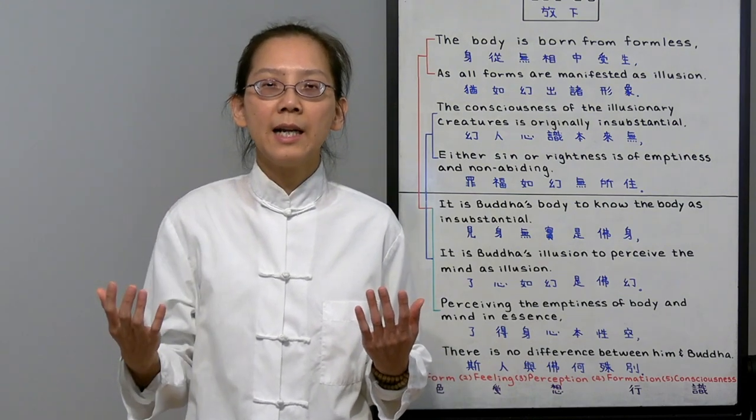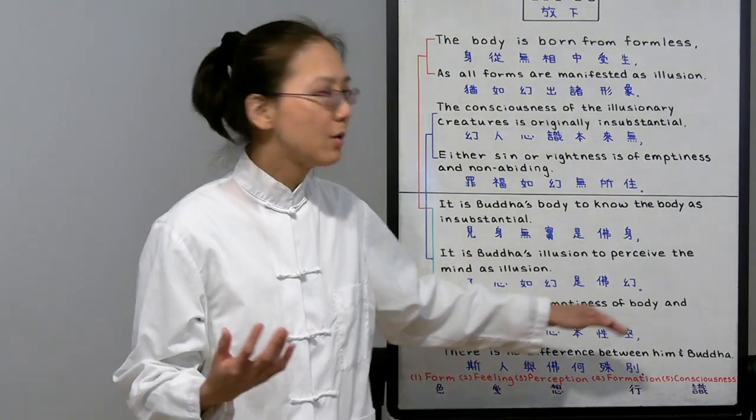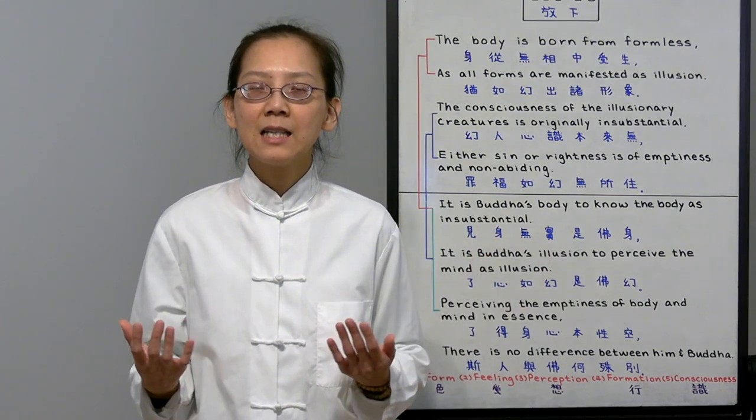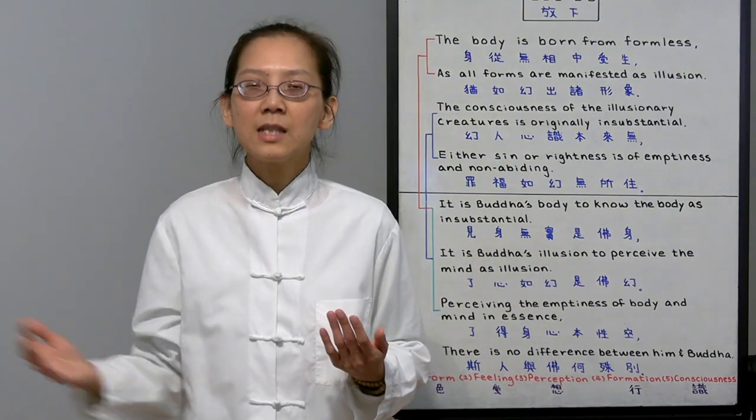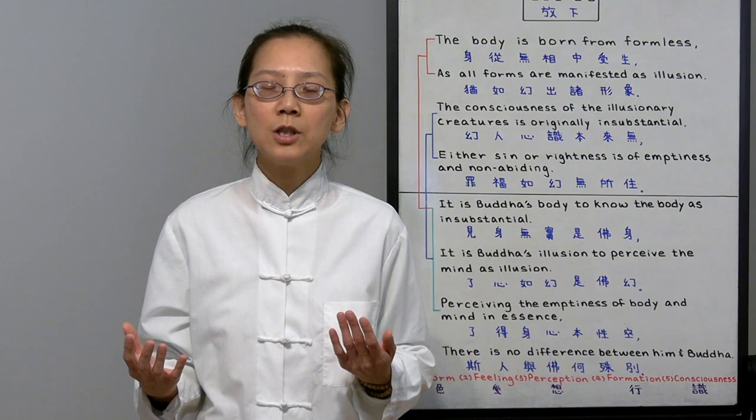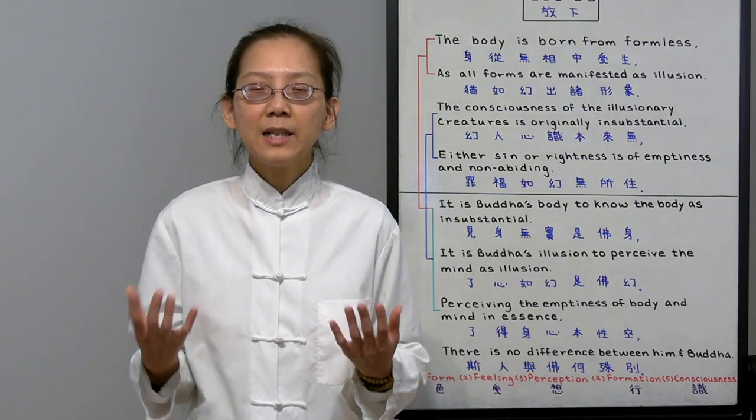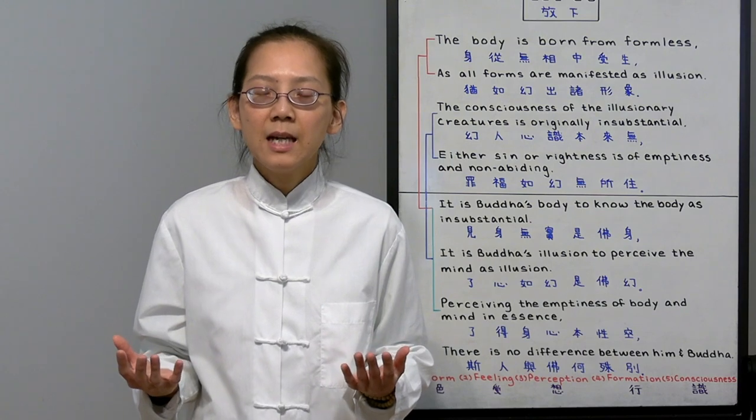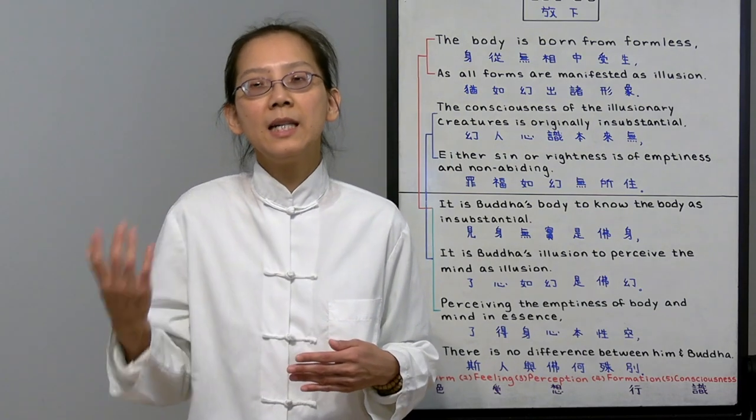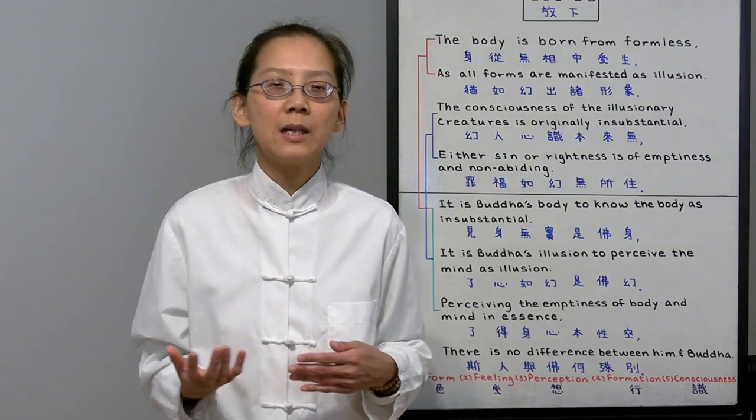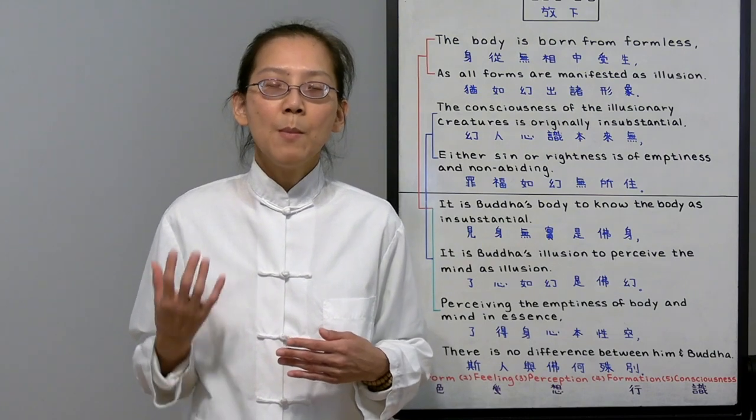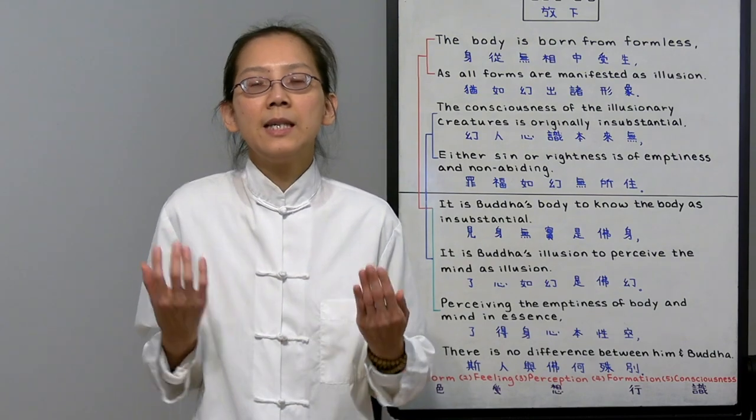So why do we reincarnate? It's actually our clinging to the five skandhas that is causing the vicious cycle of reincarnation. Buddha tells us to look at them carefully and recognize their emptiness. That way, we can really be awakened and out of the suffering. So Buddha used simple metaphors for us to see its emptiness.